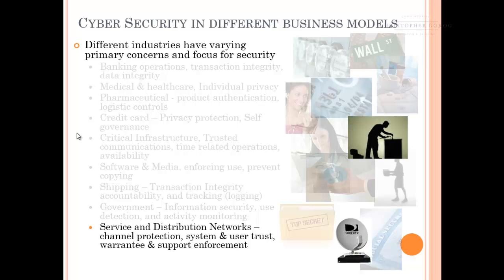Finally, service and distribution networks — like your DirecTV, internet provider, or mobile phone provider — are more concerned with channel protection and user and system trust. They need to identify that the channel between the provider and the end user is intact and that nobody's listening or able to get in. Verifying the receiving end is important because they have a device in a customer's hand — an untrusted environment — so you have to have trust for a device in that environment. Warranty and support enforcement is also a big focus: knowing who has what subscription, whether they have it, and honoring contractual agreements without providing more than what was agreed.